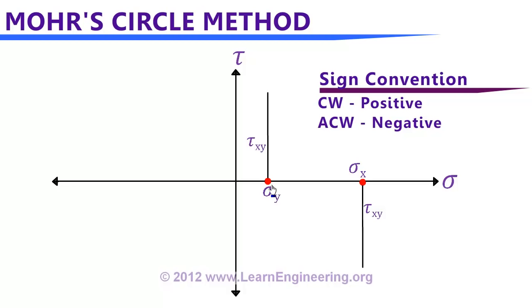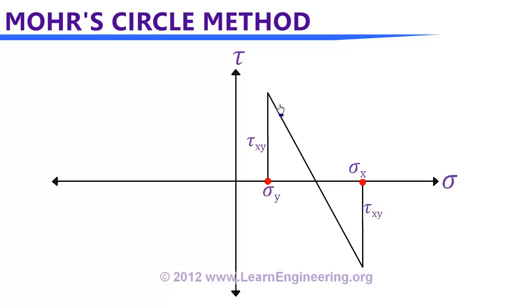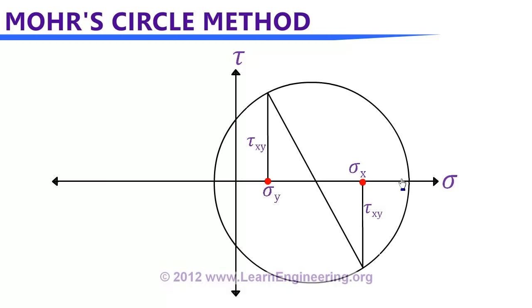Third step: draw shear stress values parallel to the vertical axis, starting from the already marked normal stress values. For sign convention of shear stress: if the shear stress tends to rotate the body clockwise it is drawn as a positive value; if counterclockwise, it is negative. In our problem, on the y-plane the shear stress was rotating the body clockwise, so it is marked positive. Fourth step: draw a line connecting the ends of the shear stress lines. Final step: draw a circle assuming that newly drawn line is the diameter — this is the Mohr circle.